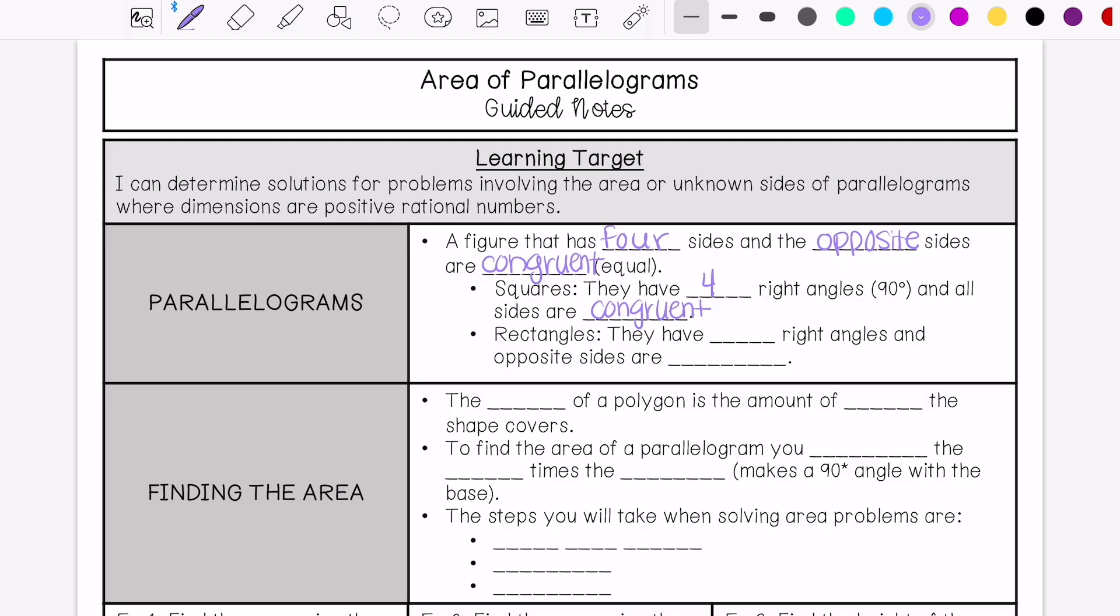And rectangles have four right angles, and their opposite sides are congruent. So squares, all sides are congruent. I think I accidentally said opposite sides. And rectangles, the opposite sides are congruent.